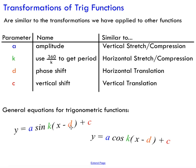The 'd' parameter is inside the brackets after the x — this is what we call a phase shift. It's the exact same thing as a horizontal translation. We move to the right if we're subtracting, and to the left if we're adding. The parameter 'c' at the end is the exact same thing as a vertical translation, but it's usually called a vertical shift.